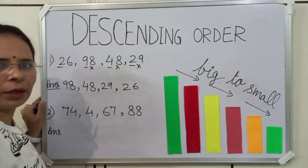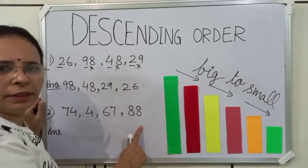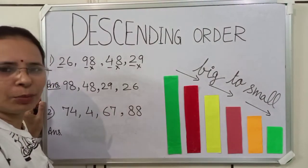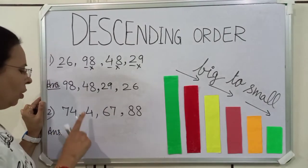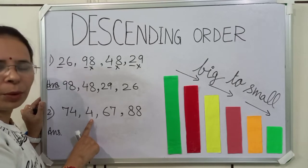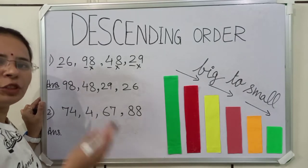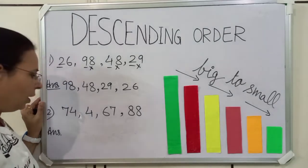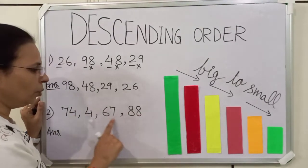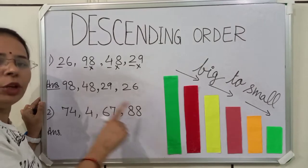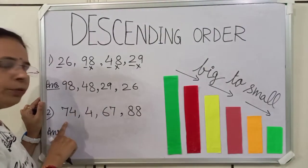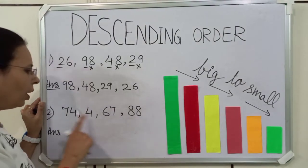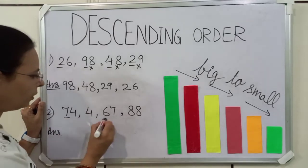Now, we will see one more example. Here, we have to arrange these numbers in descending order. First, we have to make sure that all the numbers are two digits. You can see here, 4 is a single digit number. Always remember, single digit numbers are smaller than two digit numbers. So, we have to compare these three two digit numbers. To compare these numbers, we have to compare their tens place number. Now, we will find the biggest number among these three numbers, and we will underline the tens place number.